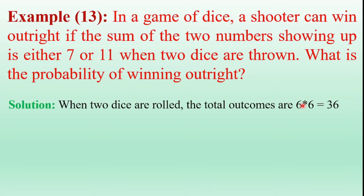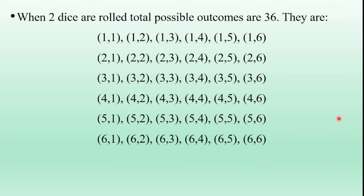Coming to the solution: when two dice are rolled, the total possible outcomes are 6 into 6 equal to 36. The total possible outcomes of the given experiment are 36. The sample points of the sample space when throwing two dice include: (1,1), (1,2), (1,3), (1,4), (1,5), (1,6) and (2,1), (2,2), (2,3), (2,4), (2,5), (2,6).